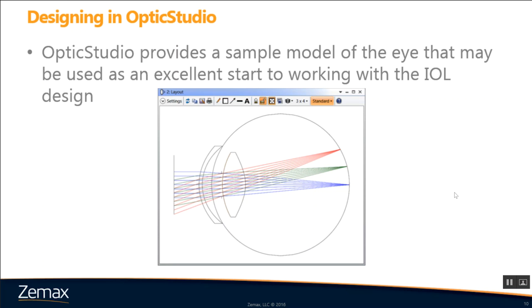And again, here is the sample model that we'll be using for the human eye. Now, this can be downloaded on the knowledge base article, Zemax models of the human eye. And it's included, along with other models, additional models, including a non-sequential model. So that can be downloaded there.